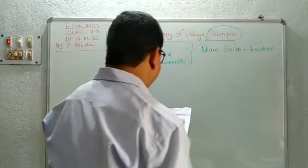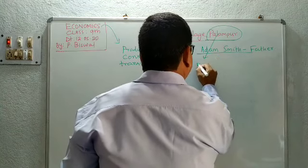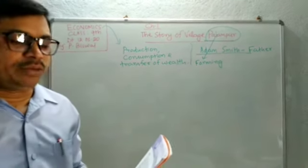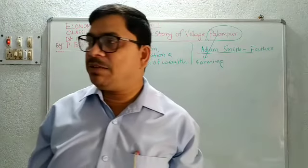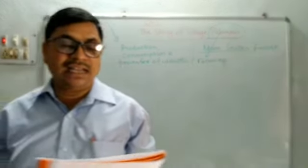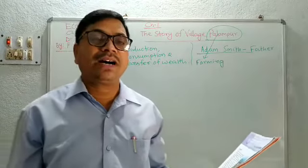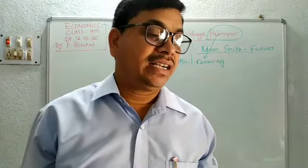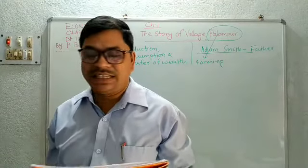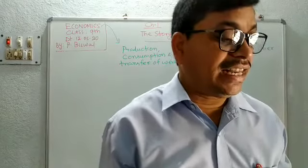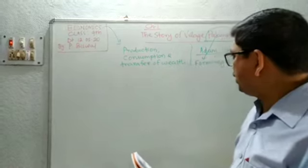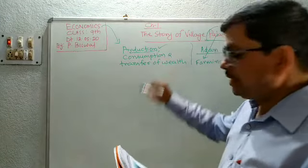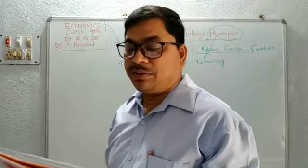Farming is the main economic activity in the village Palampur. Besides farming, other non-farm activities are also going on, such as small-scale manufacturing, dairy, and transport — all carried on in a limited scale. These production activities need various types of resources, and production is a very complex method.